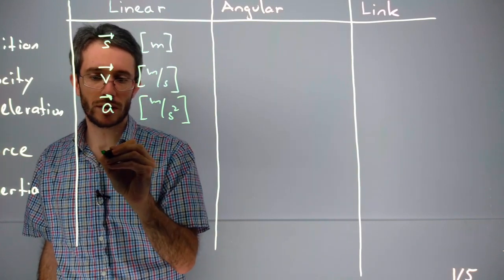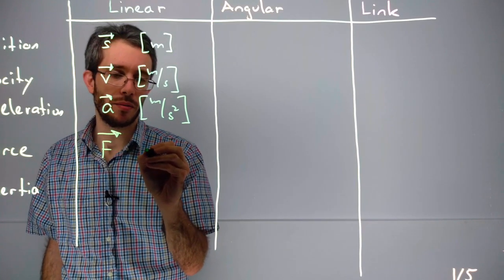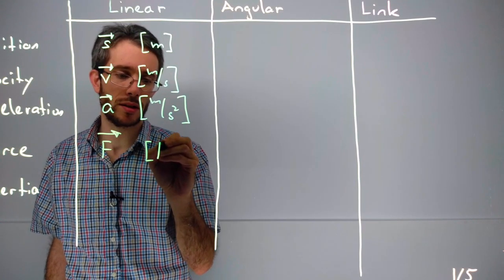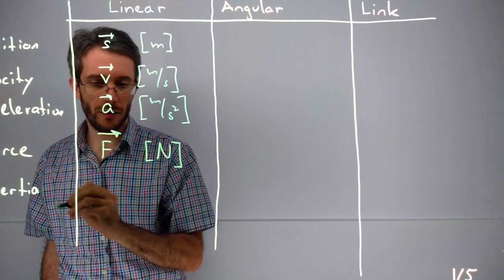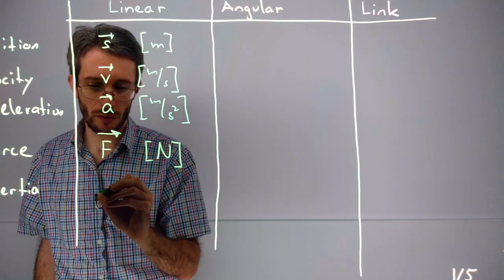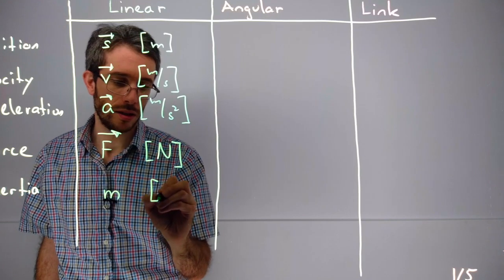Going on with force, we use F, also a vector named after Mr. Newton, so SI unit Newton. And we had the linear inertia, which is the mass in kilograms.